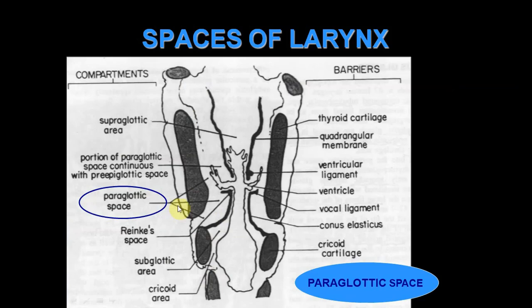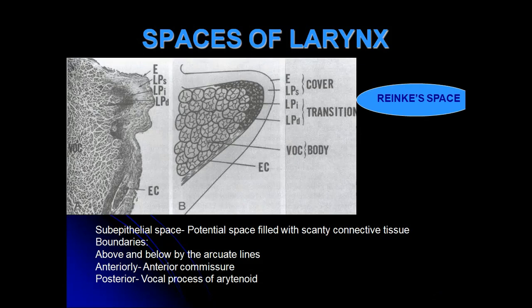The paraglottic spaces are on the sides of the vocal cords. Each is bounded laterally by the thyroid cartilage, inferomedially by the conus elasticus, medially by the ventricle and the quadrangular membrane, and posteriorly by the mucosa of the piriform fossa. Reinke's space is a potential sub-epithelial space between the epithelium and the conus elasticus, filled with scanty connective tissue. It is limited above and below by the arcuate lines, anteriorly by the anterior commissure, and posteriorly by the vocal process of the arytenoid cartilage.